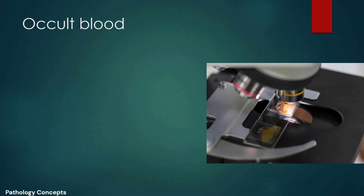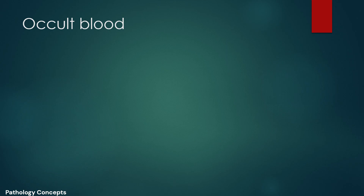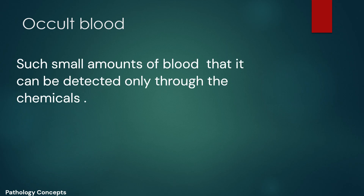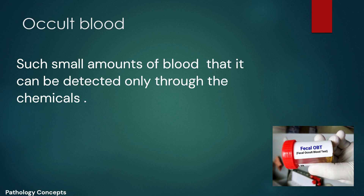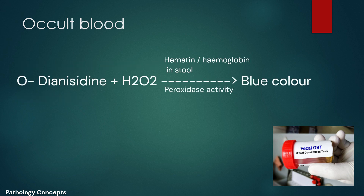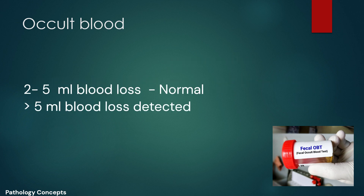Now let's learn about occult blood. Occult blood is present in such a small amount that it can be detected only through chemicals used in a fecal occult blood test. In peroxidase-based tests, the peroxidase-like activity of hematin and/or hemoglobin catalyzes the reaction of hydrogen peroxide and o-tolidine to form a blue color. A loss of about 2 to 5 ml of blood daily is normal in the intestine; hemorrhages above this limit can be detected with the Hemoccult test.